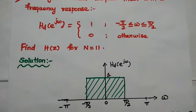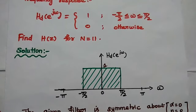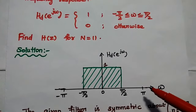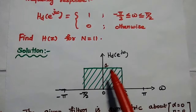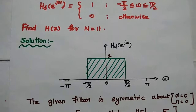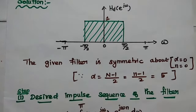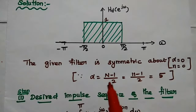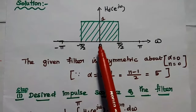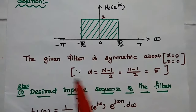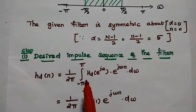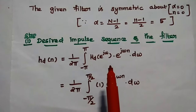In the solution path, first we have to draw the frequency response diagram for the given data. The frequency response value is 1 from -π/2 to +π/2. From this diagram we come to know that the given filter is symmetric — exactly symmetric on both sides with respect to 0. Now we are going to use the Fourier series method to design this FIR filter.